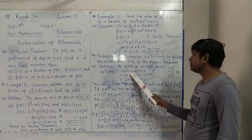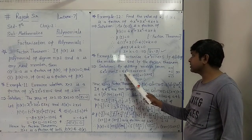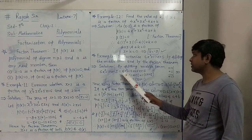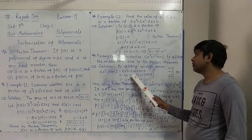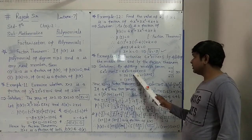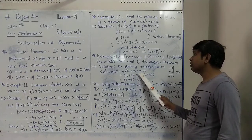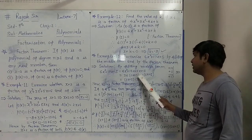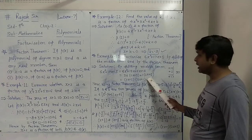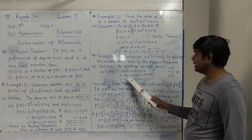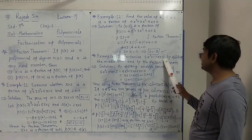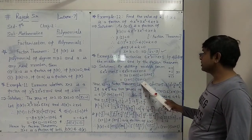Now from the first two terms, 3x is common: taking 3x out gives 3x(2x plus 5). From the last two terms, 1 is common: 1(2x plus 5). Now in both terms, 2x plus 5 is common. Writing 2x plus 5 common and the remaining 3x plus 1 in the second bracket. So the factors of 6x squared plus 17x plus 5 are (2x plus 5) and (3x plus 1).